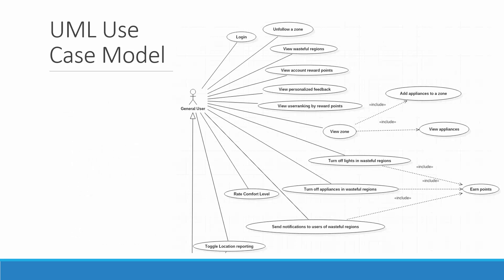This is the UML use case model for the general user. In this next iteration, we allow the user to toggle whether or not they want to report their location to the SQL database. When they toggle it on, the SQL database stores their geo-coordinates of where they are inside the building. We also added the new ability to record their comfort level inside the room.